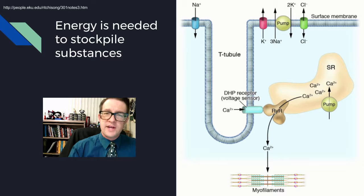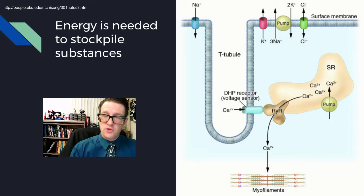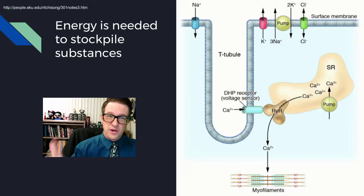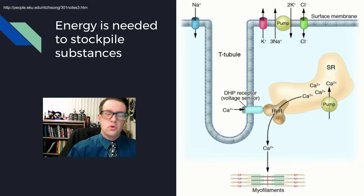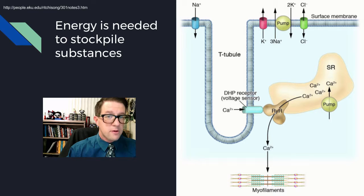We use active transport so we can stockpile. Part of that stockpiling allows us to control osmosis, and part of it allows us to control what goes on. We use active transport to let our nerves work, to let our brains work, and to store calcium. Calcium turns out to mess with a whole bunch of stuff, which is why we need to control where it is at all times. We use active transport to put stuff away where we want it, probably because we're going to use it later.